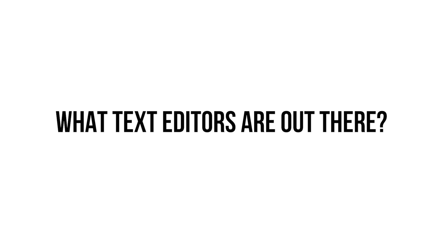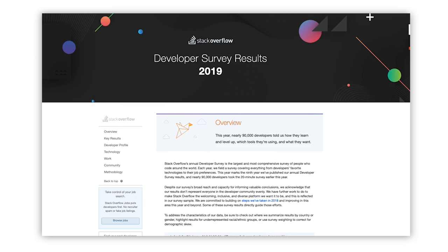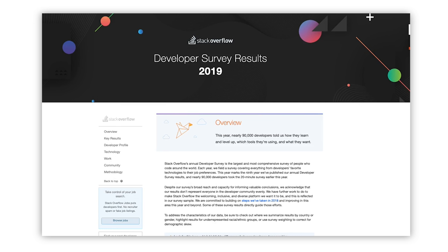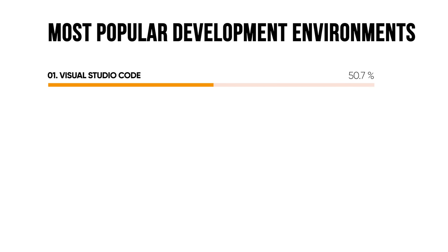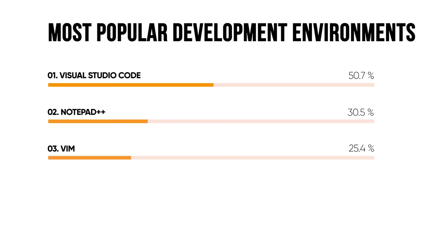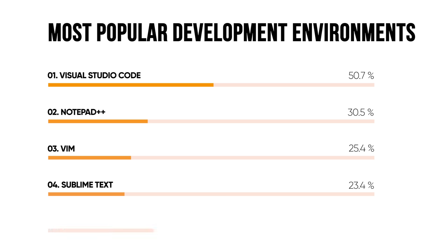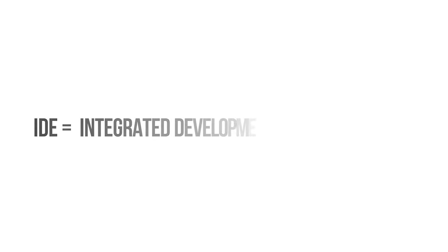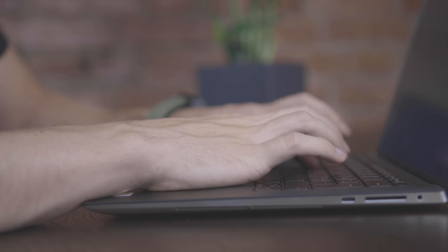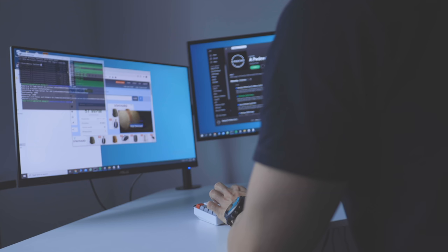The first question we need to answer is what text editors are actually out there. Stack Overflow really helps us here because they did a poll in 2019 of over 87,000 developers asking which text editor they use most commonly. The most commonly used one is Visual Studio Code with 50.7%, second place Notepad++ with 30.5%, third place Vim with 25.4%, fourth place Sublime Text with 23.4%, and lastly Atom with 13.3%. These are the top five text editors people use.